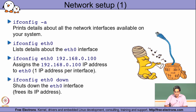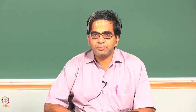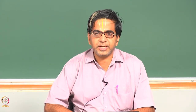The ifconfig command, if we use the -a option — where 'a' stands for all — it basically prints out all the details about the network interfaces available on the system. When we say interfaces available on the system, it essentially means the different interfaces that have been detected at the hardware level by the OS when it was booted up, and also subsequently.